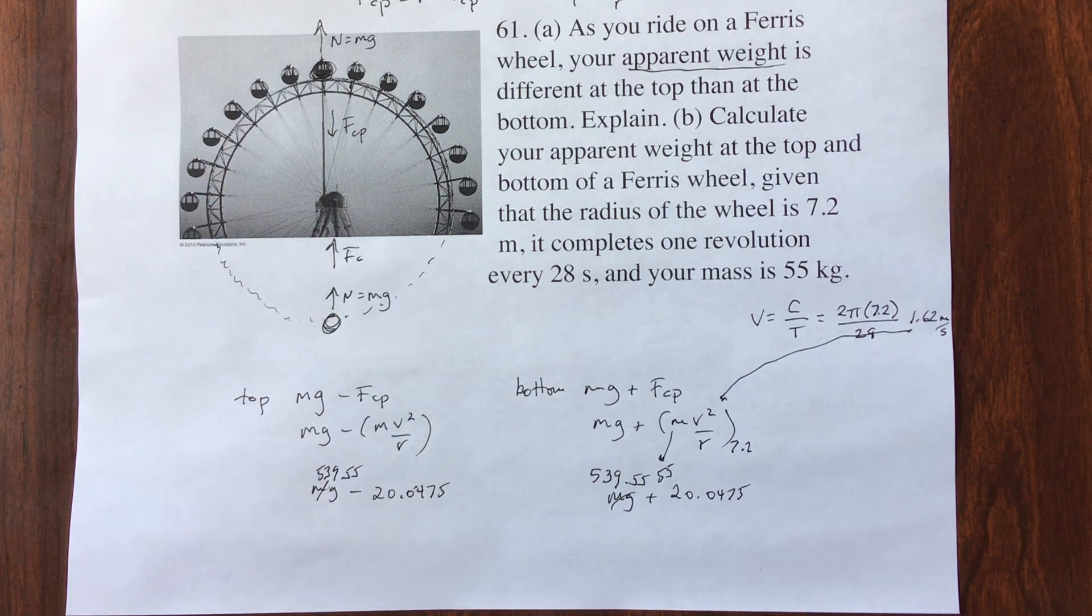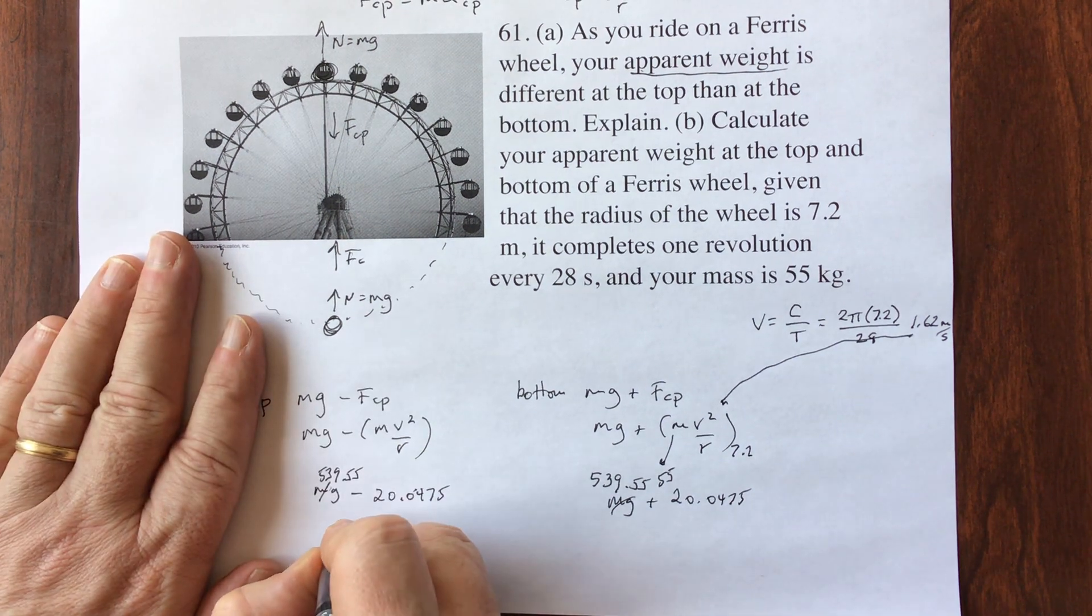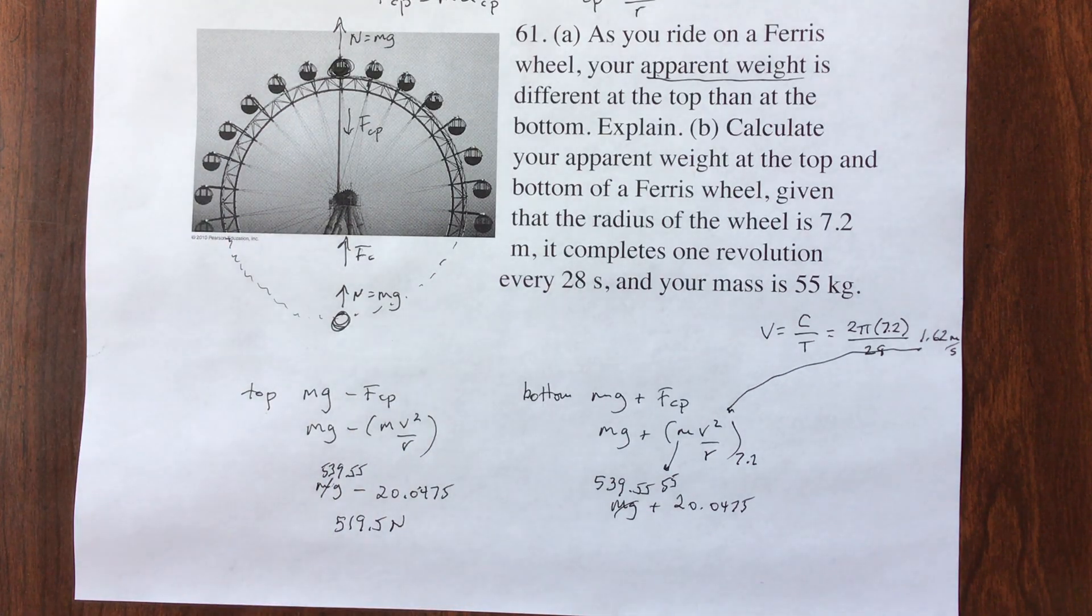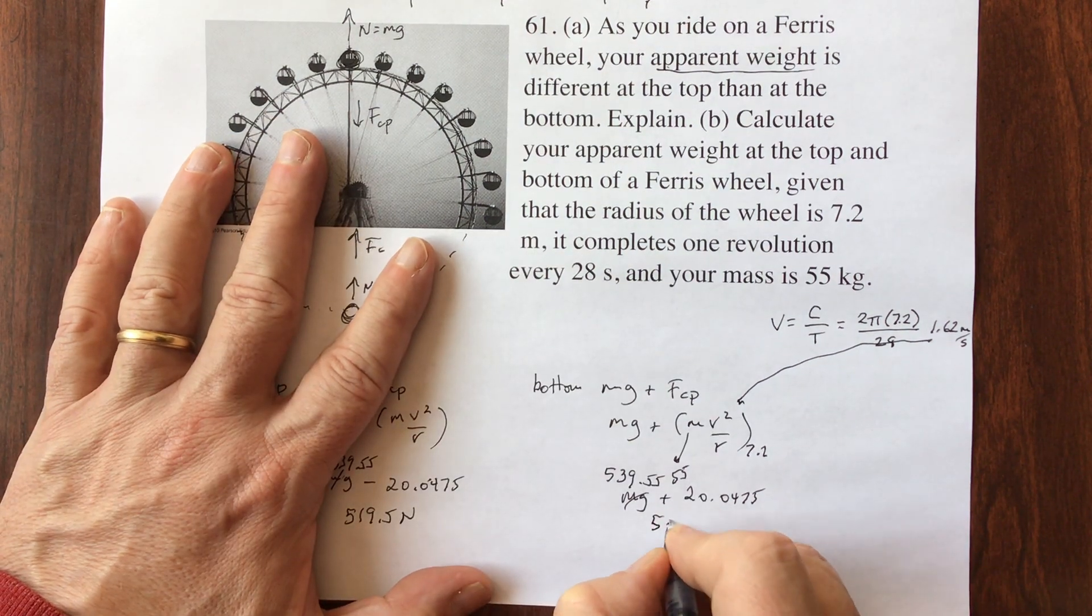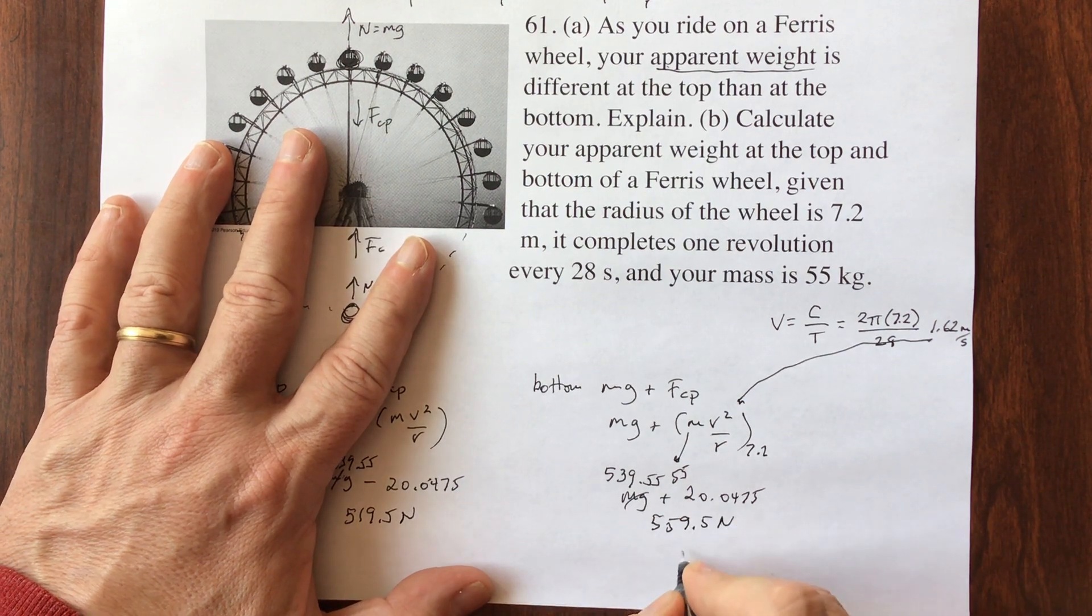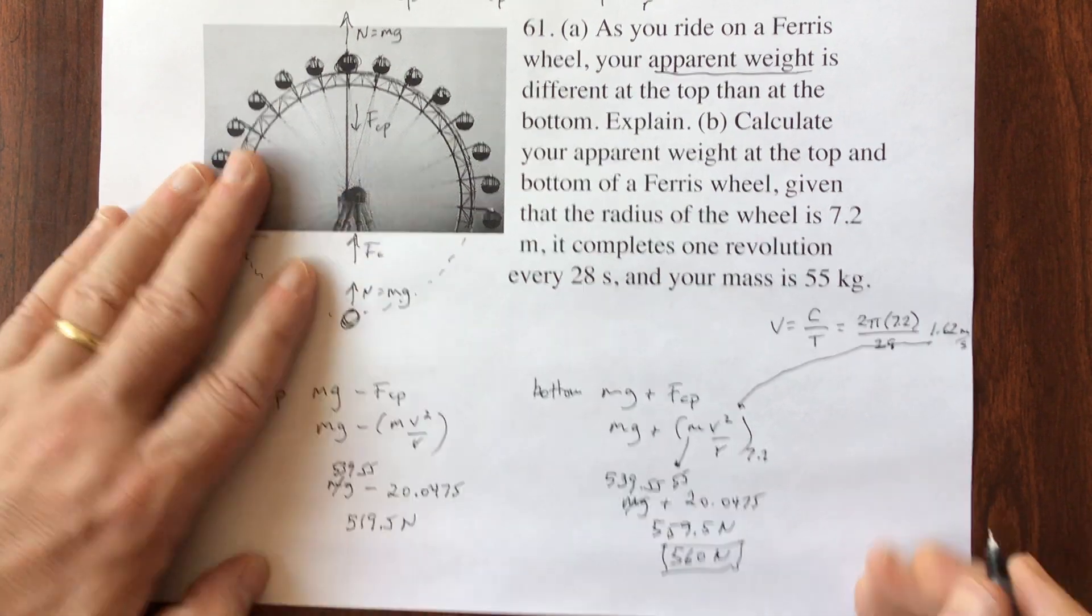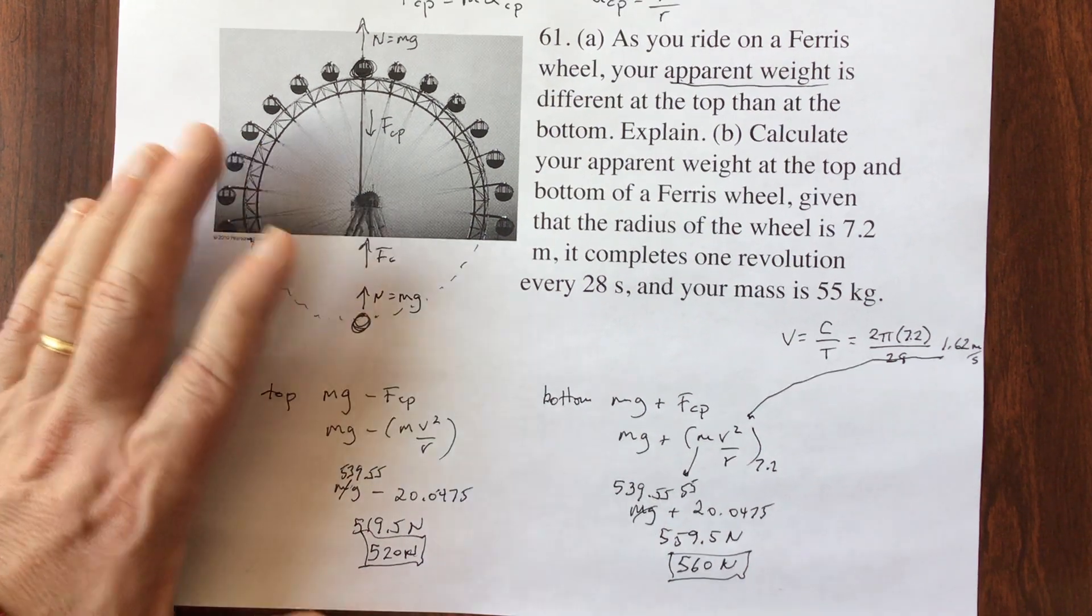So at the top, 539.55 minus 20.0475 is 519.5 newtons, because that's subtracted, and at the bottom, 539.55 plus 20.0475 is 559.5 newtons. So I guess this would be 560 newtons, round to 2, and this would be 520 newtons, round to 2.